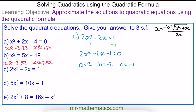So x = (1 ± √3) / 2, which gives approximate solutions of x ≈ −0.37 and x ≈ 1.37.